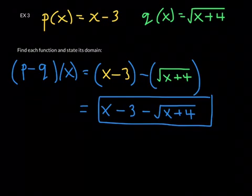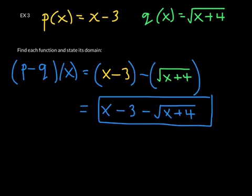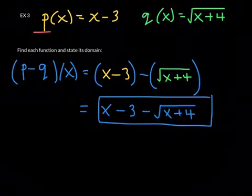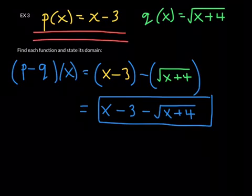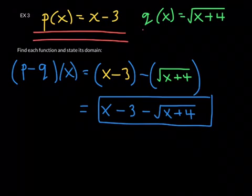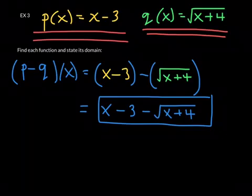Now we want to talk about its domain. When you look at function p, I'm going to draw your attention up here. Look at function p. Function p up here is a linear function, therefore its domain is all real numbers. However, function q up here is a square root function, and so we have to be careful about its domain. So let's have a conversation right now about the domain of q.